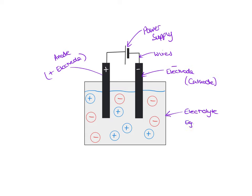The electrolyte could be sodium chloride — normal salt — either molten or dissolved. It could be aluminium oxide, which is used in industry to extract aluminium for making aeroplanes and coke cans. Your electrolyte is made of ions, so you will have positive ions and negative ions in there. Obviously in a lab you wouldn't be able to see these — they're too small — but I've drawn them out so we know what's going on. These are the key words: anode, cathode, both types of electrode, the electrolyte, and power supply and wires.